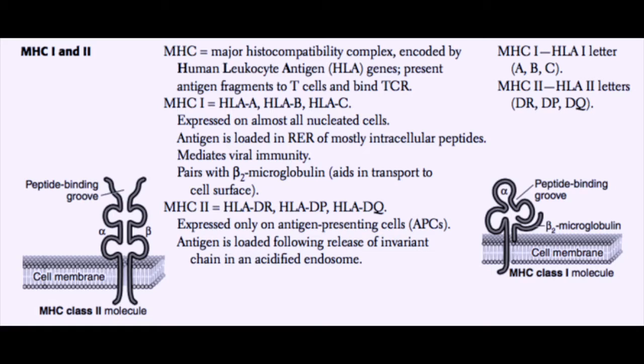MHC class 2 also has three subtypes: HLA-DR, HLA-DP, and HLA-DQ. These are expressed only on antigen presenting cells, or APCs. The antigen loaded onto MHC class 2 follows the release of invariant chain in an acidified endosome — the MHC class 2 travels from the rough ER to an endosome containing antigen brought in from the outside. It is then loaded by releasing the invariant chain from the binding site and loading it with a peptide chain, then migrating to the surface to present to CD4 T cells through an MHC–TCR interaction.